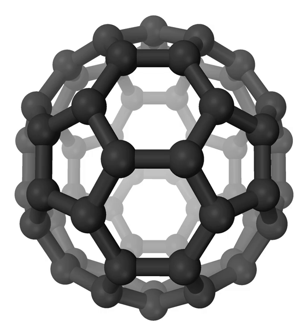HCN, not HNC, was first detected in June 1970 by L. E. Snyder and D. Buhl using the 36-foot radio telescope of the National Radio Astronomy Observatory. The main molecular isotope was observed via its J=1-0 transition at 88.6 GHz in six different sources.